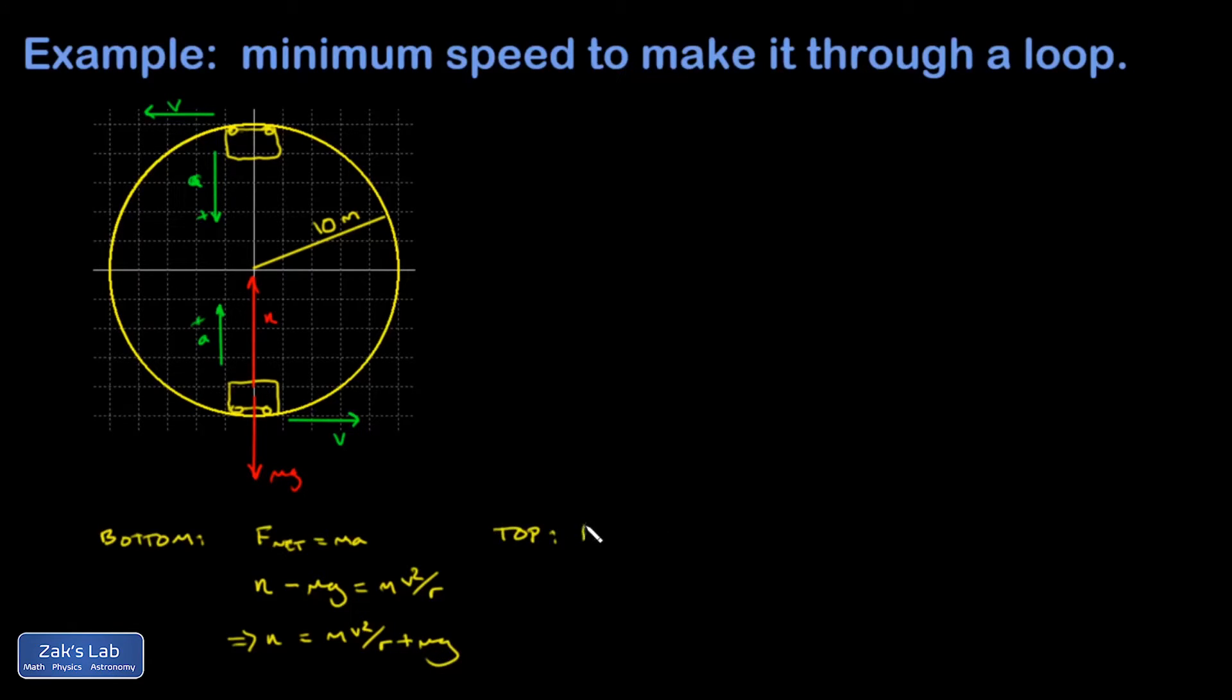In the top configuration, analyze F net equals MA. Gravity is still pulling down, now that counts as the positive direction. And if you're going fast enough, you're going to have some normal force. I end up with N plus Mg equals Mv squared over R. In other words, gravity is helping out the normal force by pointing to the center of curvature and adding to that centripetal force. So normal force doesn't have to do as much. Normal force is going to be Mv squared over R minus Mg. Just at a glance, I can tell that the normal force is less at the top than at the bottom.